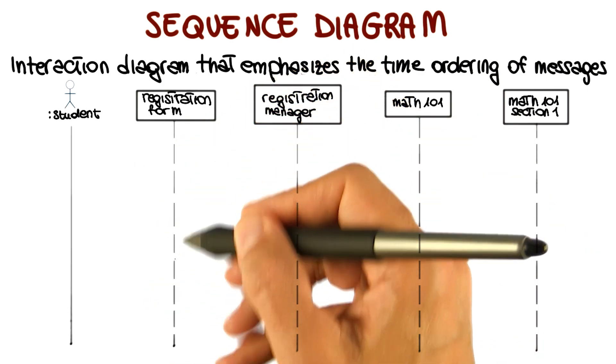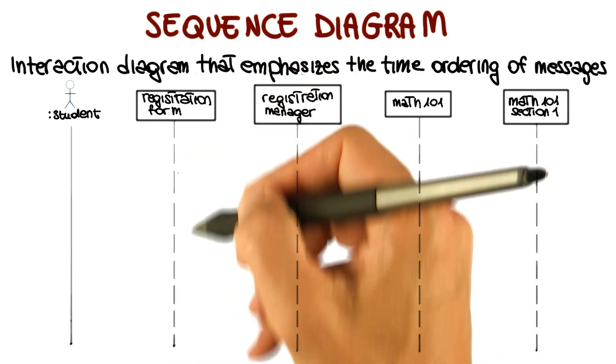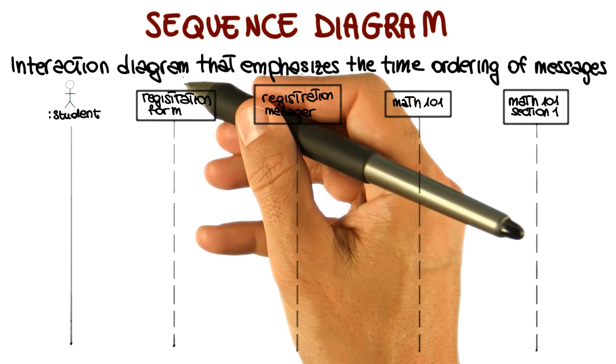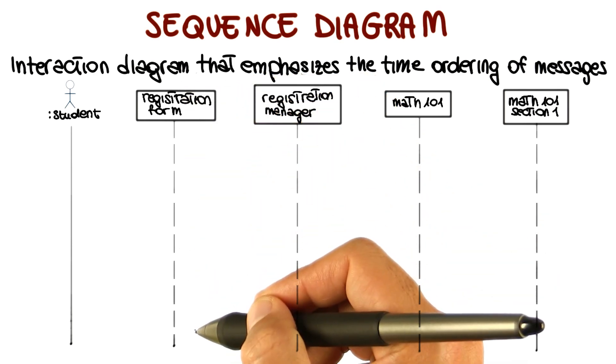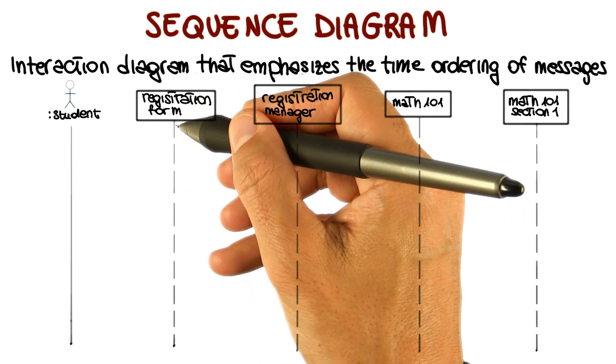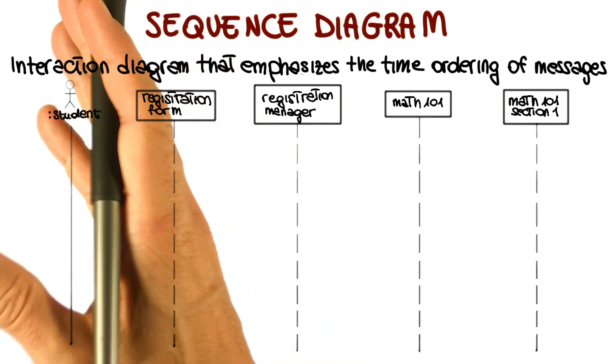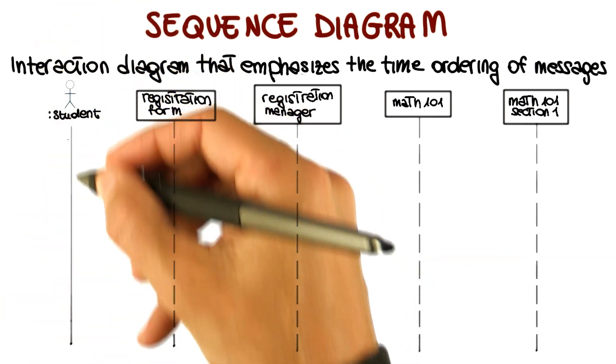Next thing you want to do is to add what is called an object lifeline. It's a vertical line that shows the existence of objects over a period of time. It's normally represented with a dashed line, except for the outermost object for which it is a solid line.